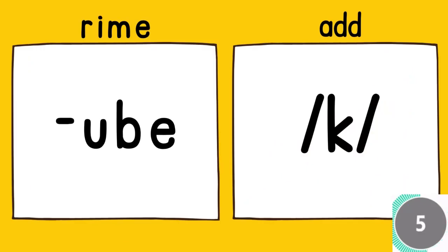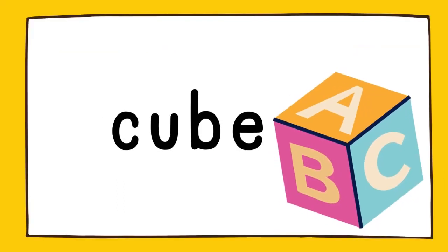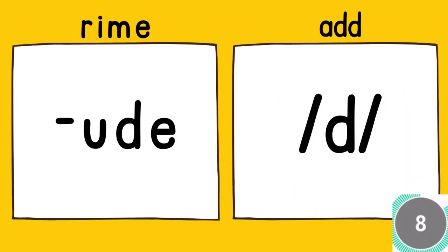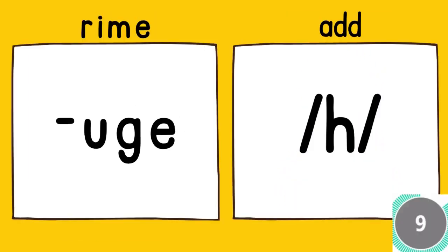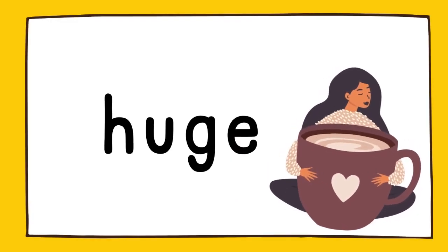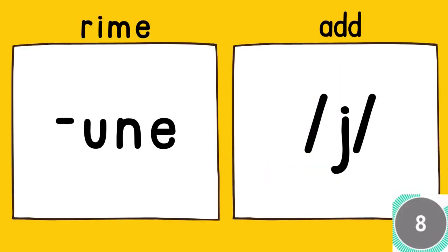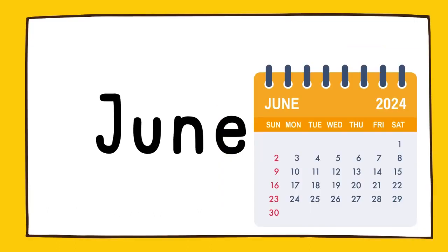The rhyme is oob, add k. Cube. The rhyme is ood, add d. Dude. The rhyme is ooj, add h. Huge. The rhyme is oon, add j. June.